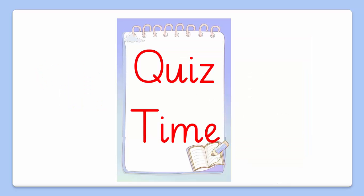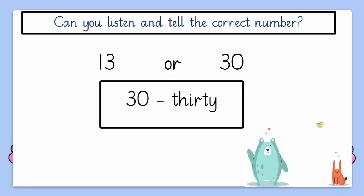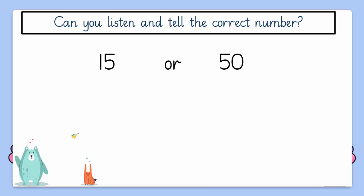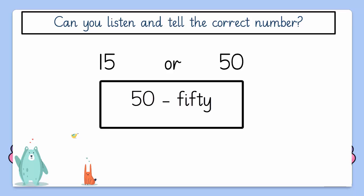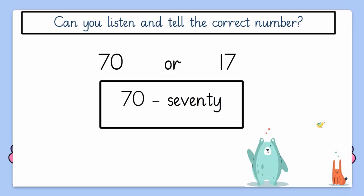So these are all the T numbers from 20 to 90. It's now time for a quiz. Let's see if you can solve this. Can you listen and tell the correct number? 30. That's right, it's number 30. Let's do another one. 50. Great job, it's 50. Let's do another one. 70. That's right! You got it all right! Well done, little ones!